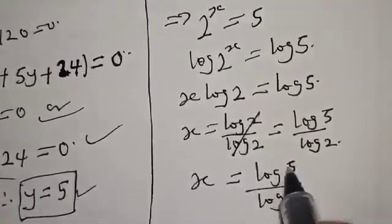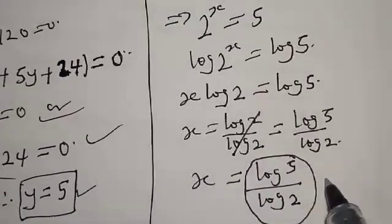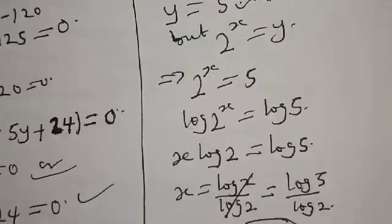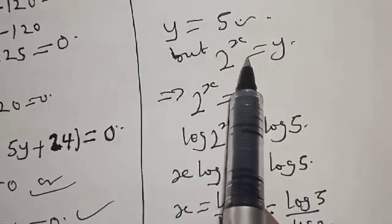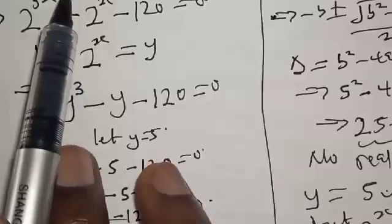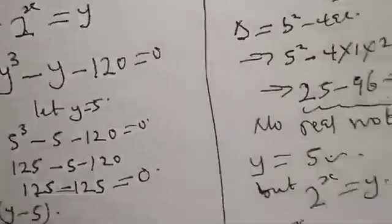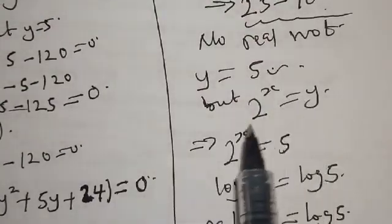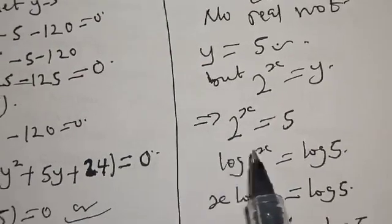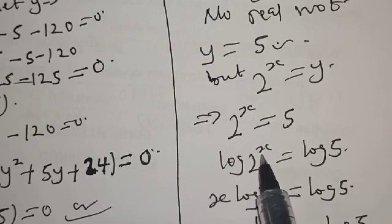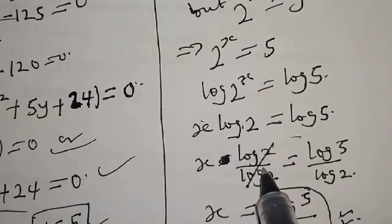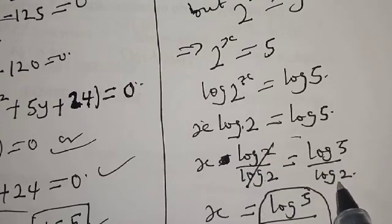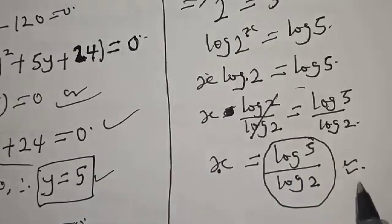So that is the real value of x, and that is our answer. Please don't forget to like, share, comment and subscribe. Thank you. To summarize: since 2 raised to power x equals 5, we take the log of both sides, giving x log 2 equals log 5, and dividing both sides by log 2, our final answer is x equals log 5 over log 2.